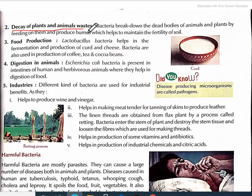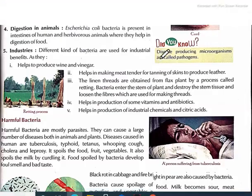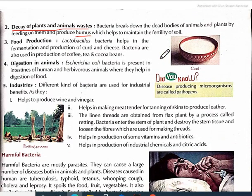Second use: decay of plants and animal waste. Bacteria break down the dead bodies of animals and plants by feeding on them and produce humus, which helps to maintain the fertility of the soil. Saprophytic bacteria feed on dead parts of plants and animals, breaking them down. When they break down into humus, the soil's fertility is maintained and the environment is cleaned.